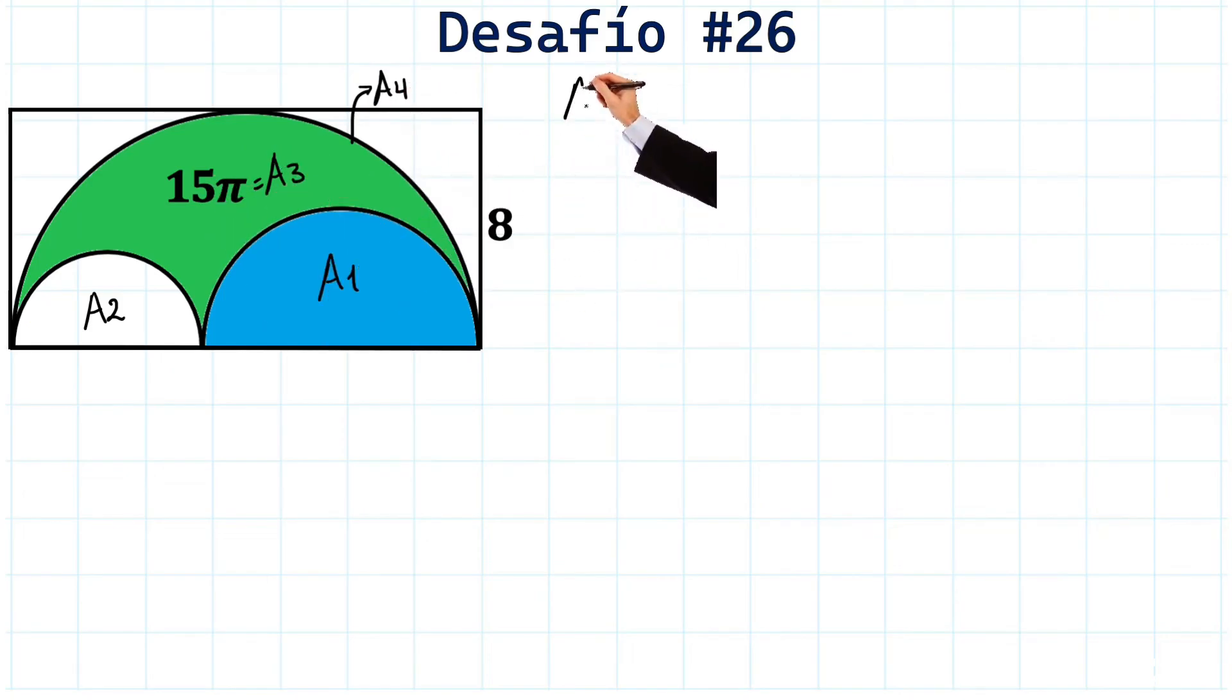So, you will agree with me that area 4 is equal to area 1 plus area 2 plus area 3. Perfect, straightforward, right?